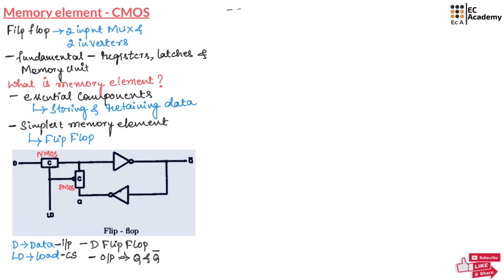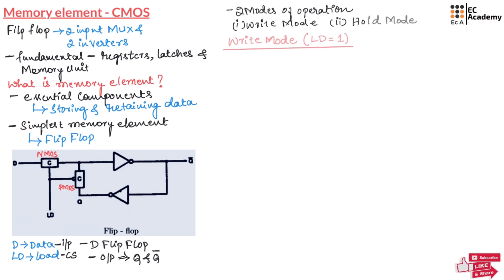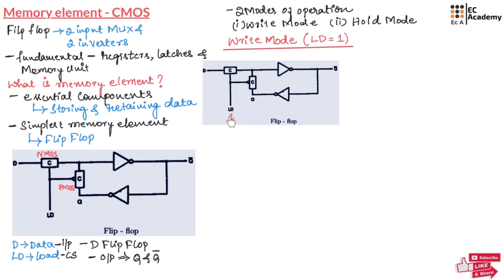This circuit operates in two modes: write mode and hold mode. First, let us talk about write mode when LD is equal to 1. When the control signal LD is 1, this value appears across both NMOS and PMOS. When the input to NMOS is 1, NMOS will be ON and act as a closed switch, while PMOS will be OFF and act as an open switch. Since NMOS acts as a closed switch, the input D passes through NMOS, is inverted by the first inverter, then inverted again by the second inverter, and the data appears at Q.